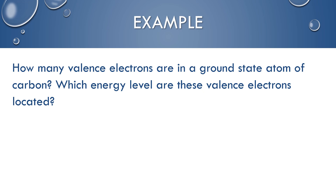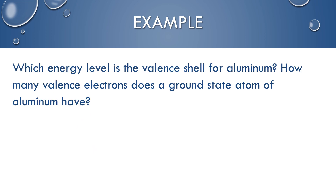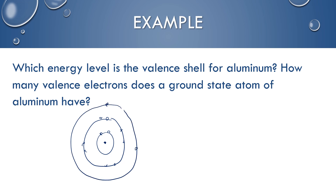Let's look at a couple of examples. How many valence electrons are in a ground state atom of carbon? The easiest way is to draw a Bohr model — carbon has 6 electrons, giving it 4 valence electrons located in the second energy level, which is the valence shell for carbon. For aluminum, which has 13 electrons: 2 fit in the first level, 8 in the second — that's 10 total — and 3 more go into the third energy level. So aluminum has 3 valence electrons located in the third energy level, which is the valence shell for aluminum.